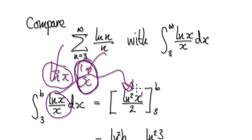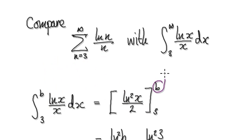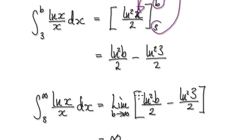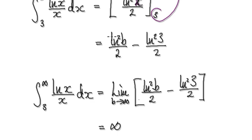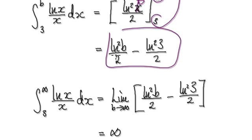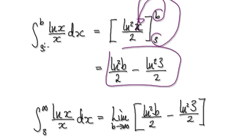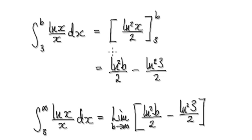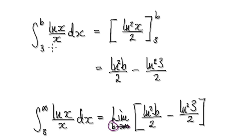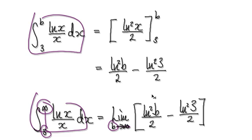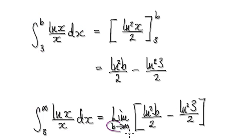Integrating gives us (1/2)·[ln(x)]² evaluated from 3 to b. Substituting b in and then 3 gives the result for the definite integral from 3 to b. Now take the limit as b tends to infinity, so we're looking at the integral from 3 to infinity.